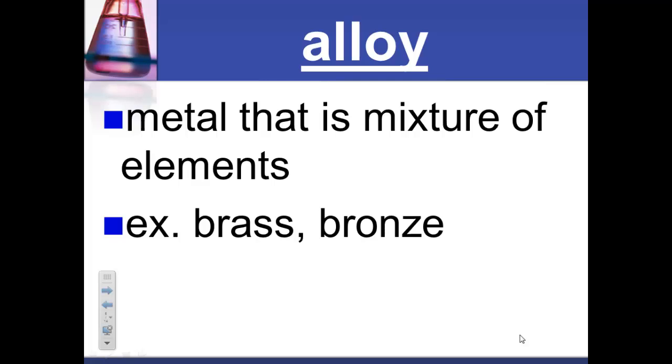For example, steel is a mixture of iron and carbon. Brass is a mixture of copper and zinc. Bronze is a mixture of metals, mostly copper and tin. These mixtures are called alloys. The properties of alloys are usually different from the properties of the original metals. The properties of the alloys depend on how much of each metal is used.